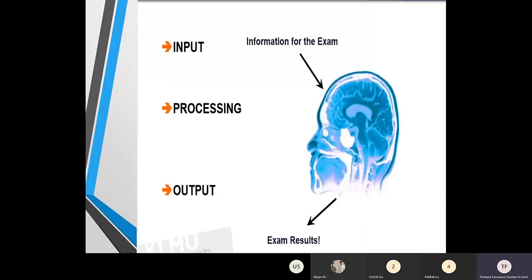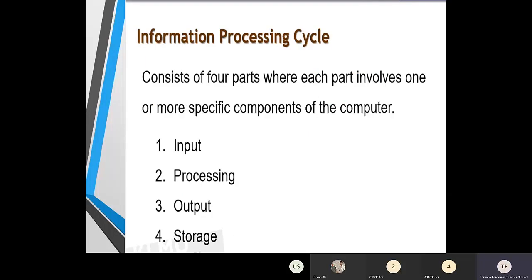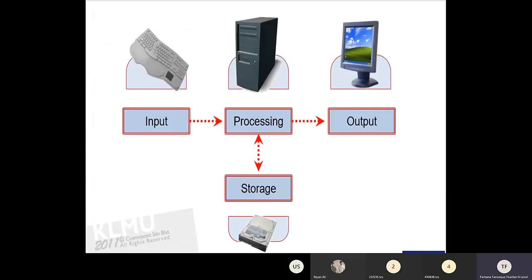The hardware needs human instructions to operate. Whatever data we give to the computer is called input. The computer processes it — passing it through certain stages via internal circuitry — and after processing, it generates output, which is called information. This whole cycle is called the information processing cycle, which consists of four parts: input, processing, output, and storage. The computer provides storage capability so that in the future you can view your data and information.